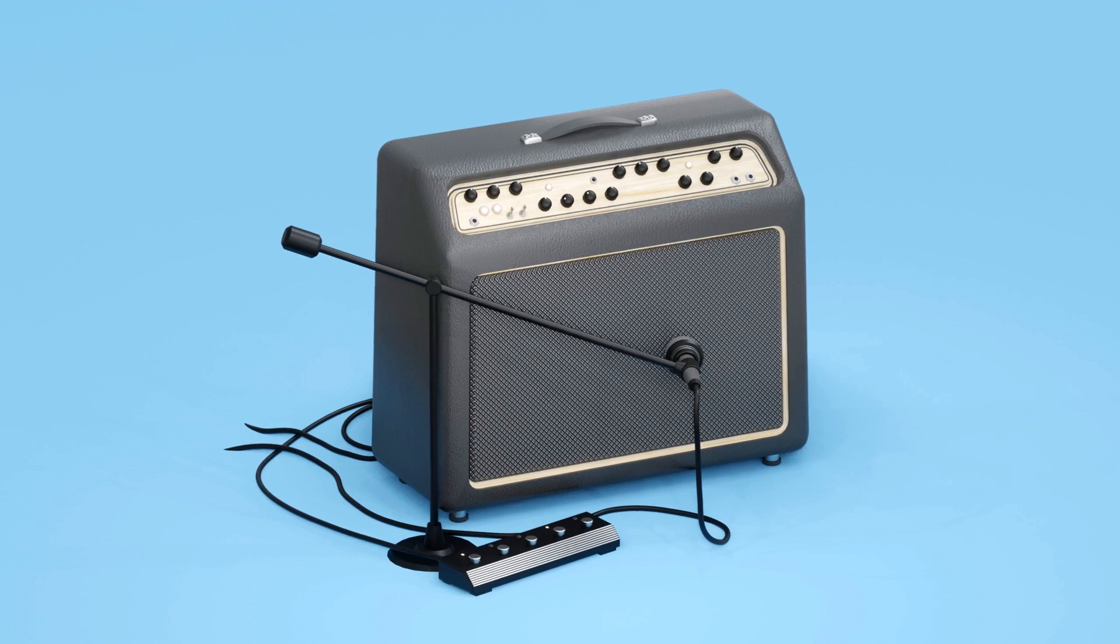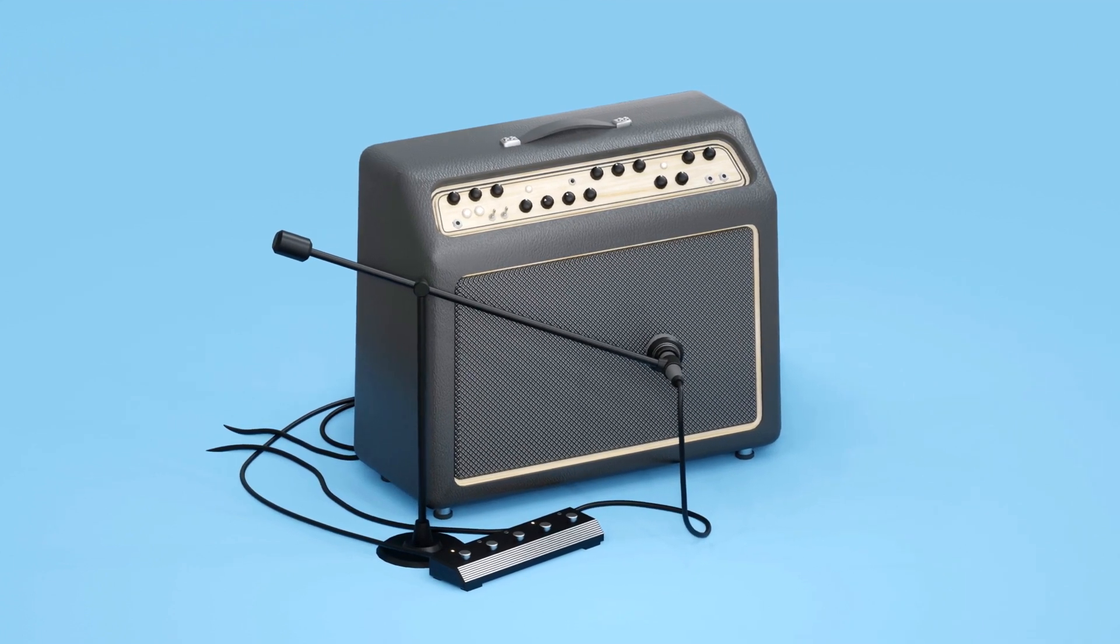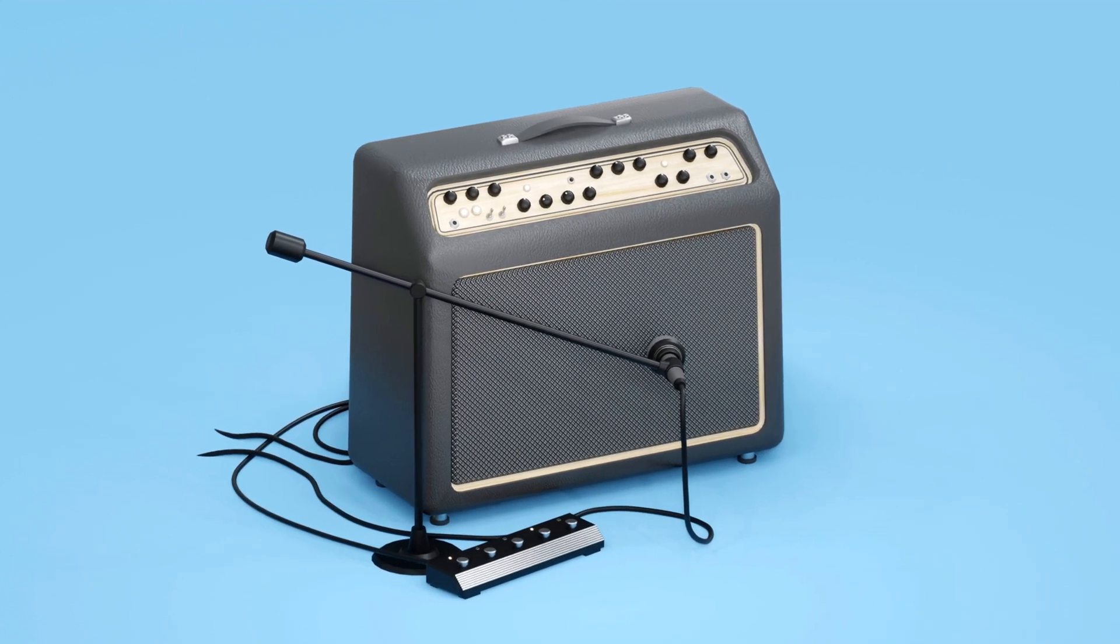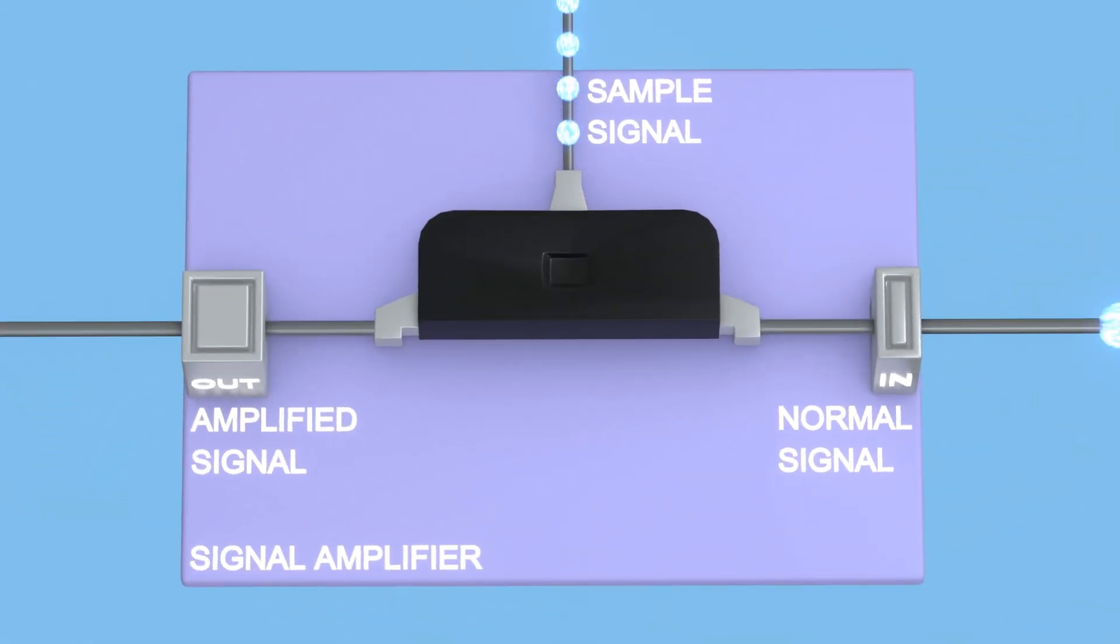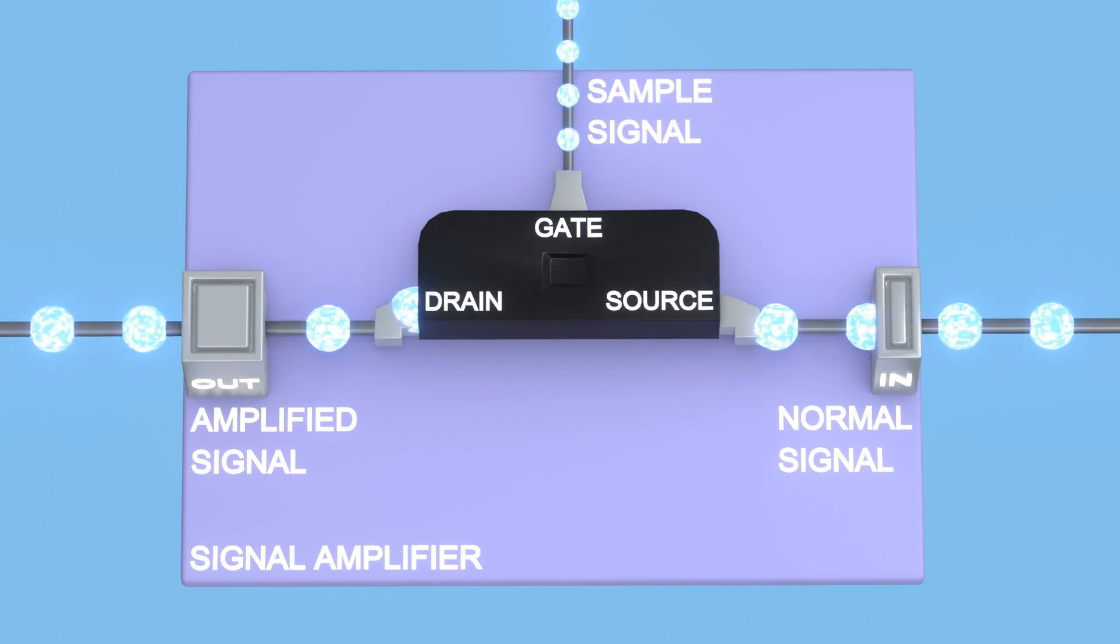MOSFETs are currently used for audio signal amplification. Let's delve into how the amplification works. As we know, the gate of a MOSFET is used to control the flow of current between the source and drain terminals, and their currents are proportional.